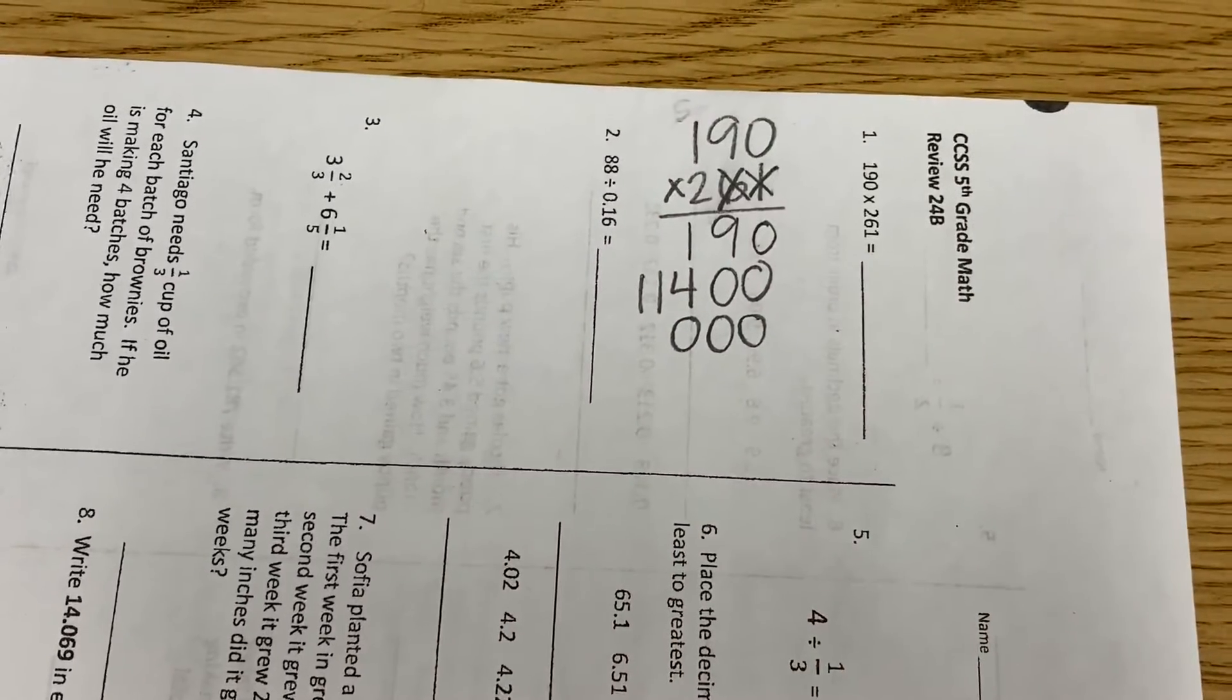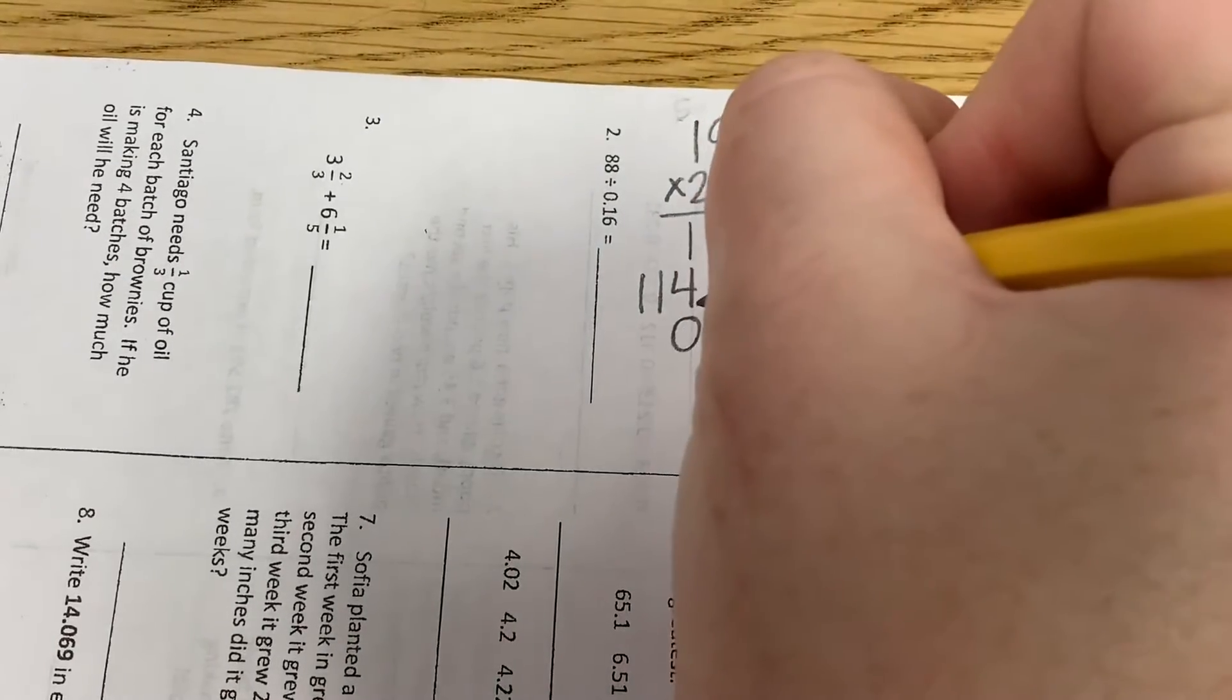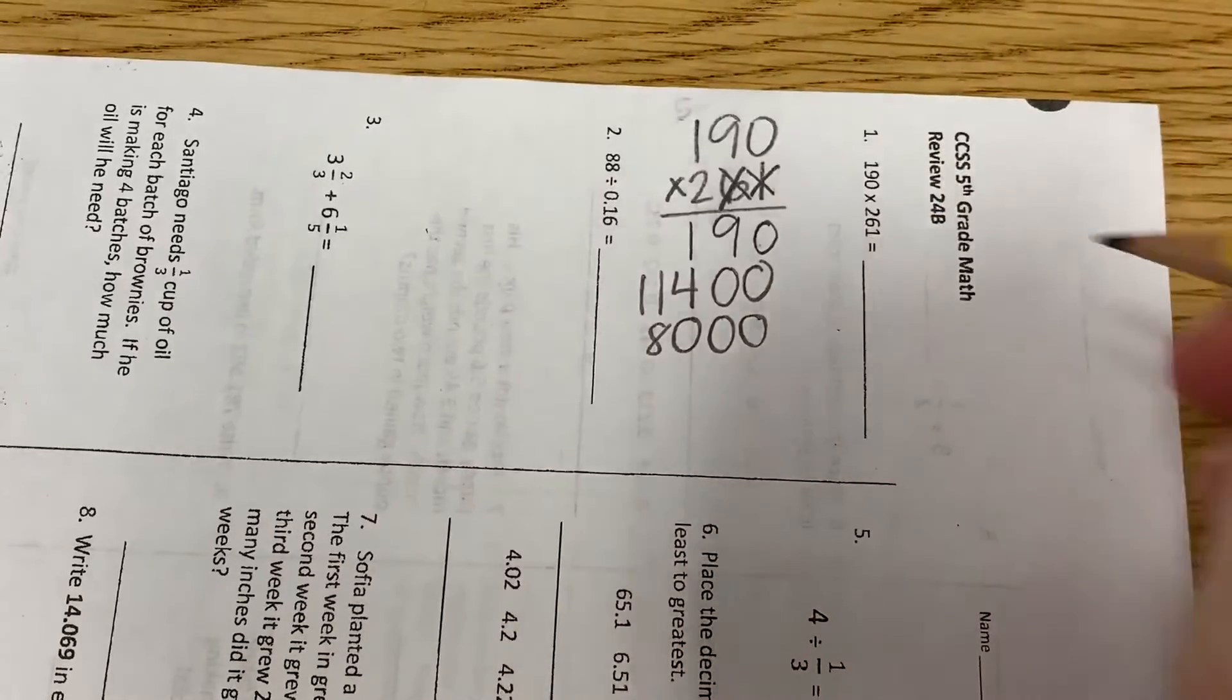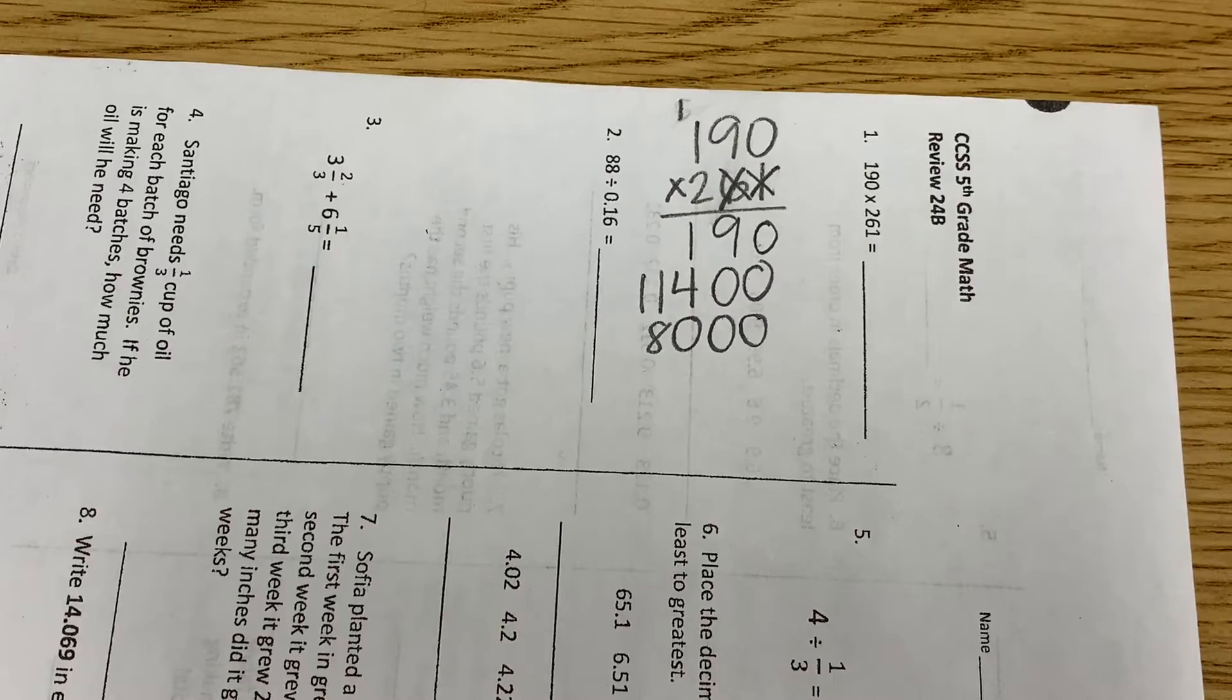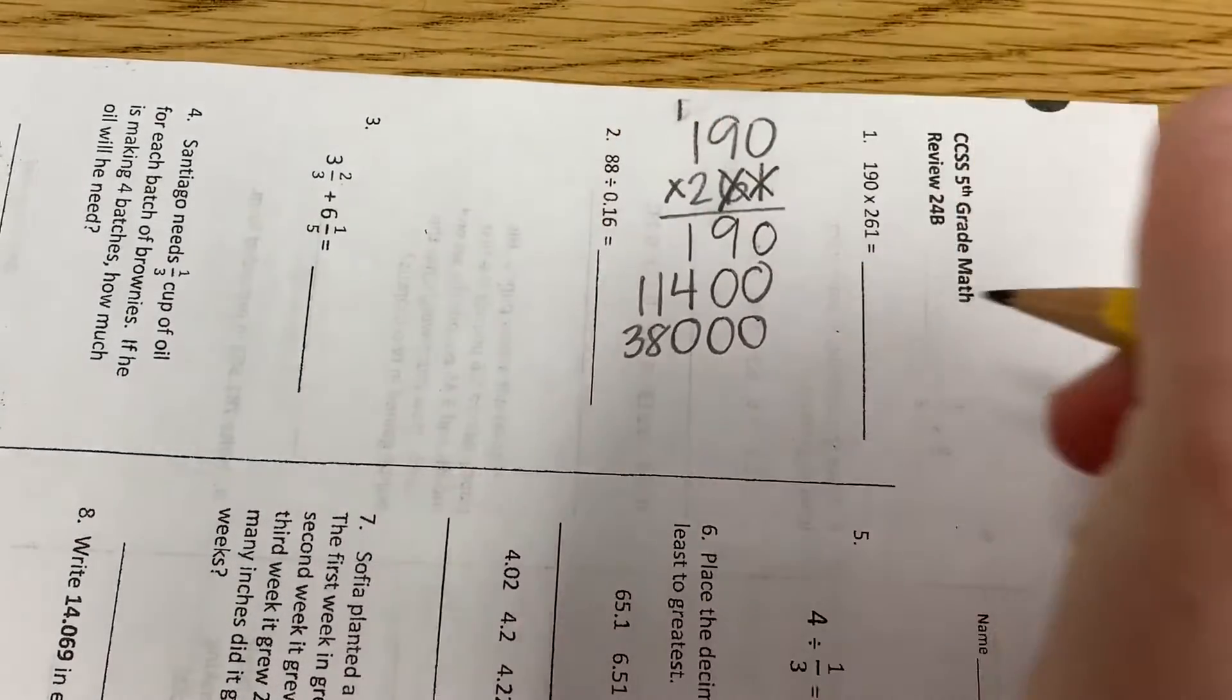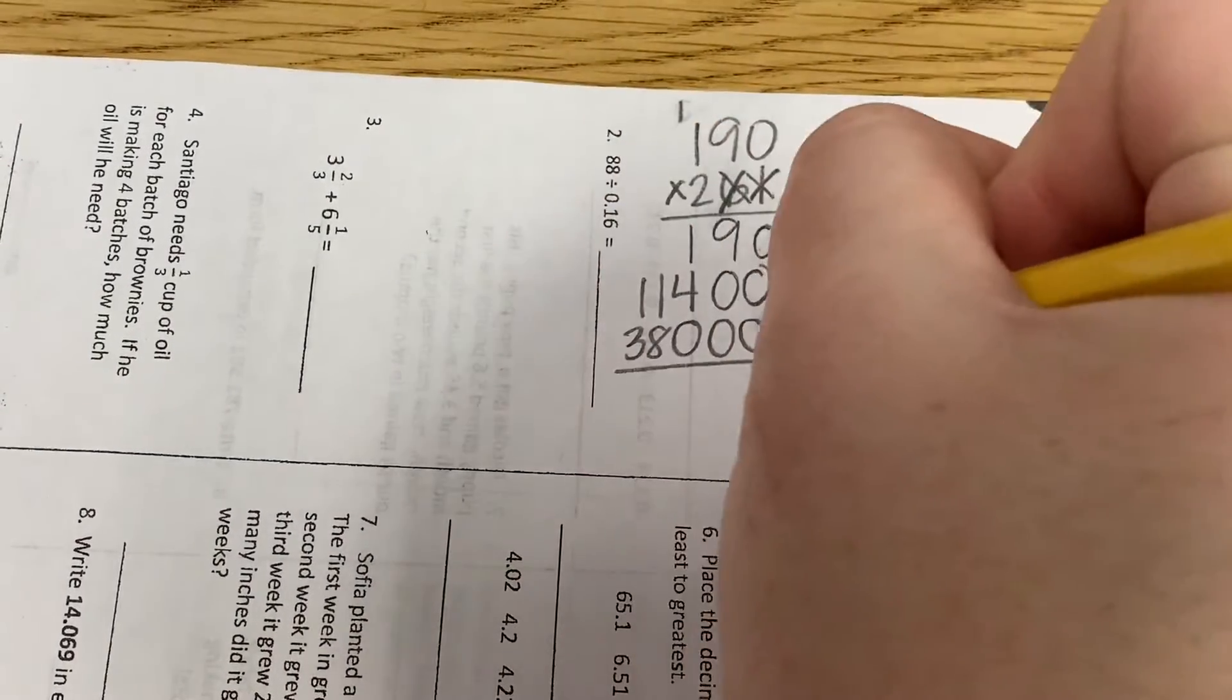Two times nine? Eighteen. So I'm going to write my eight, carry my one. And two times one is two, plus one more is three. Two times one is not three. Okay.